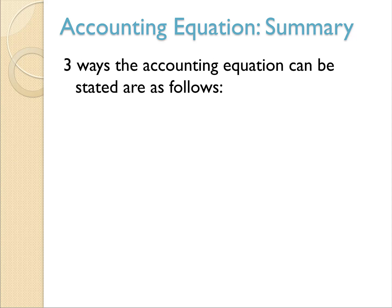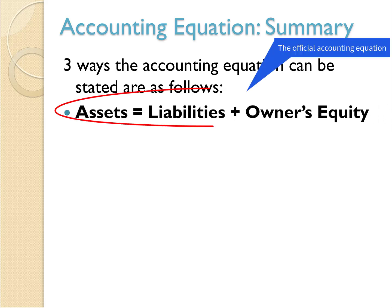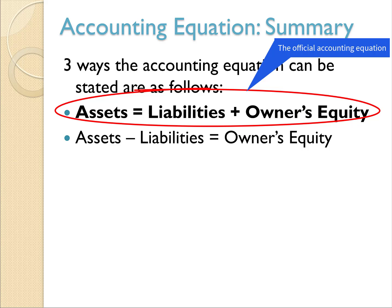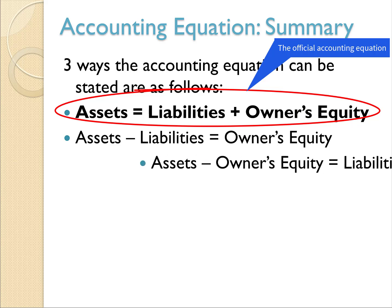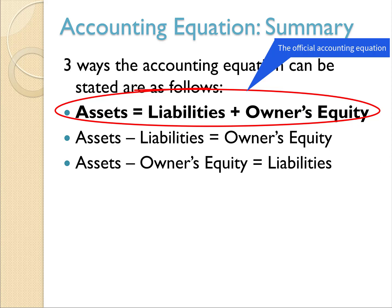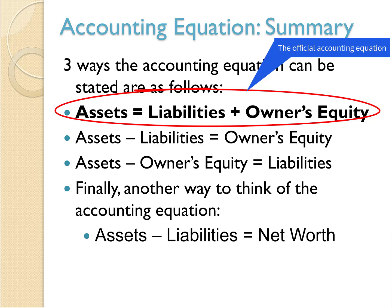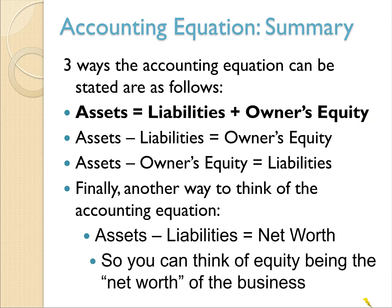Let's summarize the accounting equation. There are three ways to express it. The official way is: assets equals liabilities plus owner's equity. But if you're given assets and liabilities, you can rearrange: assets minus liabilities equals owner's equity. You could also express it a third way: assets minus owner's equity equals liabilities. And another way to think about it: assets minus liabilities equals net worth. Students can usually figure out that equity is the same as net worth, so you can think of equity as the net worth of the business.